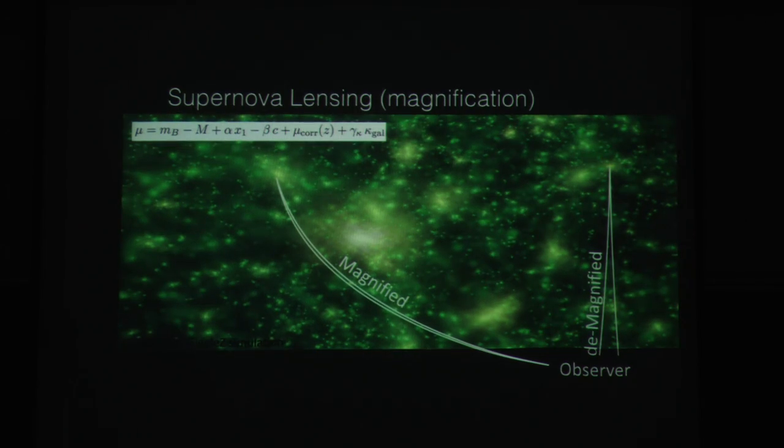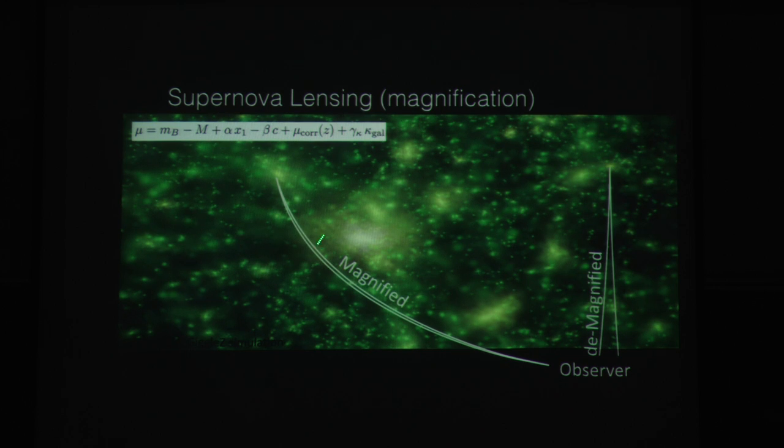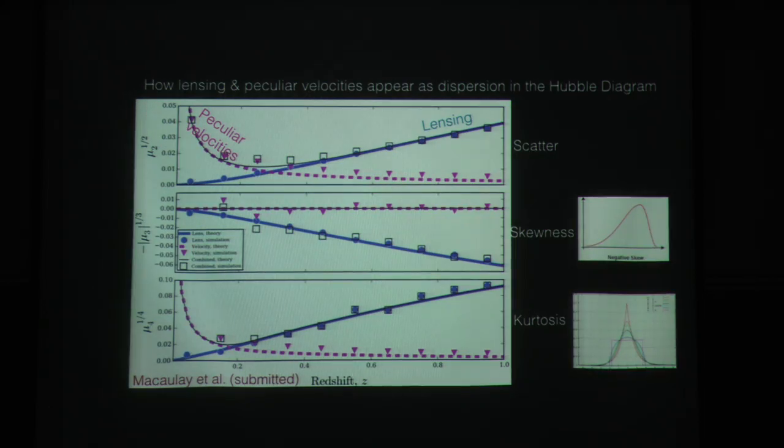Now, the supernova lensing we know that some of the scatter in this Hubble diagram here is actually signal. So, supernovae where the light travels along dense lines of sight are going to be magnified and supernovae that travel along under dense lines of sight are going to be demagnified. That causes a skewness. The mean of the magnitude is the same but it causes a skewness in the distribution and we can correlate the demagnification and magnification with the density along the line of sight as a new way to test gravity. So, we're working on this and you can see skewness and kurtosis, some of the things do with lensing and other parts work with peculiar velocities.